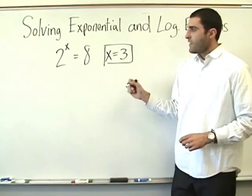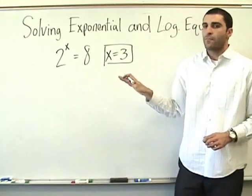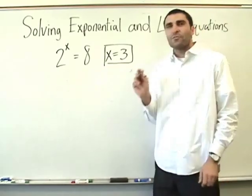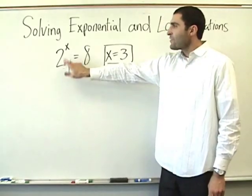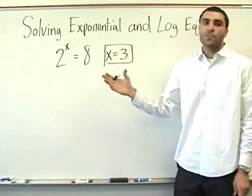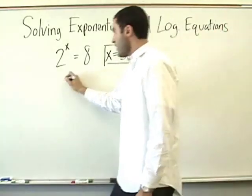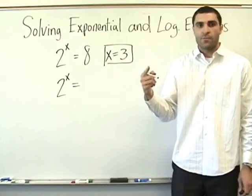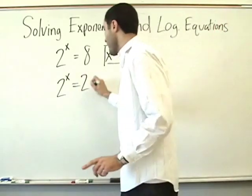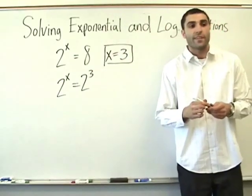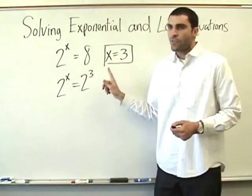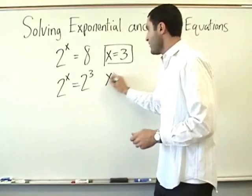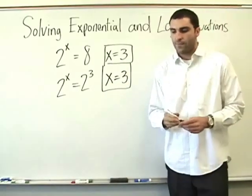Now I'm going to tell you how to solve these when they become more complex. The way to solve these is to create what's called the same base number. Right now the base number is 2. So, 2 to the x — what would 8 with a base of 2 be rewritten as? 2 to the 3rd. Good. Now once you create the same bases, it's clear that x equals 3. Once you create the same base, the exponents will be the same. We also conclude x equals 3. Questions on this?